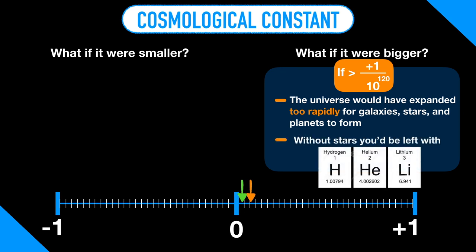Without stars, you'd be left with just hydrogen, helium, and lithium. But it's really hard to see how you could get life out of just those three basic elements. And to make matters worse, if the cosmological constant were only a little bit bigger still, then even those three elements wouldn't interact.